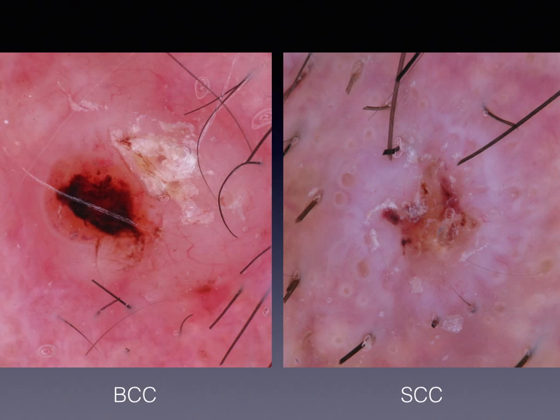For example, the differential diagnosis between the BCC on the left and the SCC on the right is not based on the ulcerated area, but on the translucent hue and the linear branching vessels of the BCC and the wide circles of the squamous cell carcinoma, respectively.